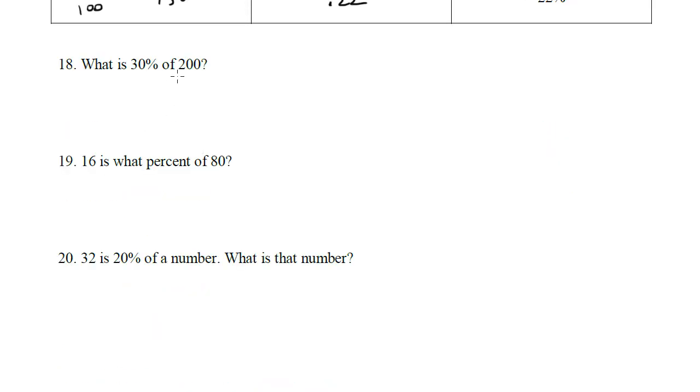What is 30% of 200? Here we want to use our methods to change words into an equation. We have what, so here's our x, is equals, 30%, we'll make that a decimal, of multiply 200. So here's our equation. We do 0.3 times 200, and we're going to get x is 60.